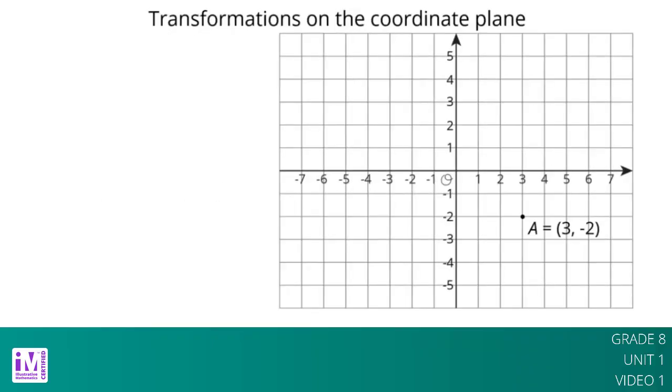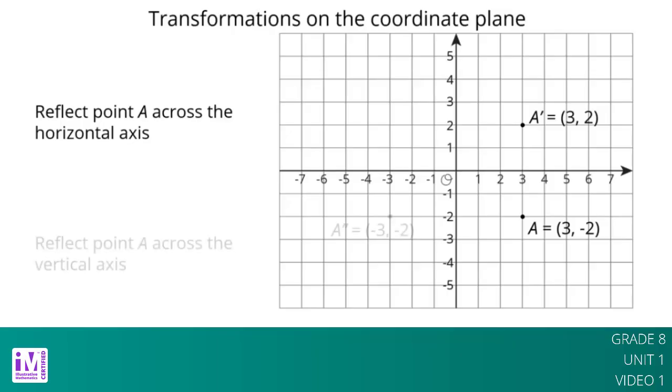On a coordinate plane, reflecting a point across an axis changes the sign of one coordinate. For example, reflecting the point A whose coordinates are across the horizontal axis changes the sign of the y coordinate, making its image the point A prime whose coordinates are. Notice how we used A prime for one transformation of A and A double prime for a different transformation of A.